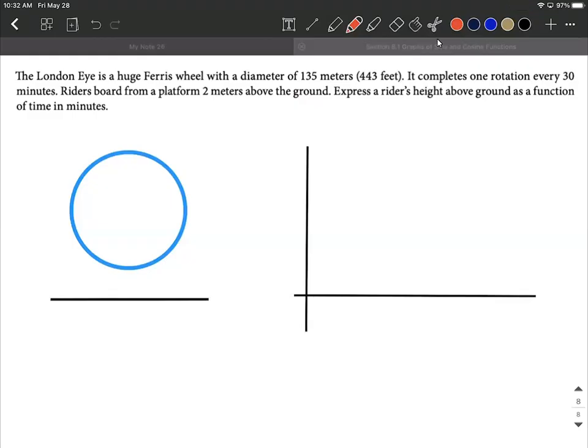Alright, a ferris wheel problem. So the London Eye is this huge ferris wheel in England with a diameter of 135 meters and it completes one rotation every 30 minutes.